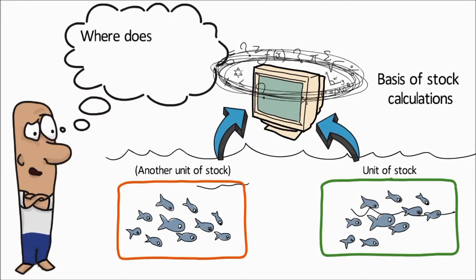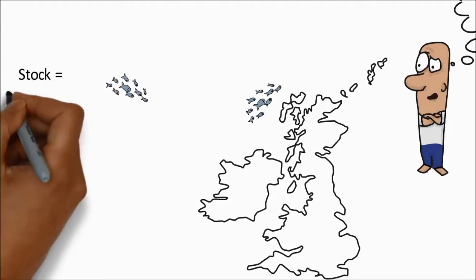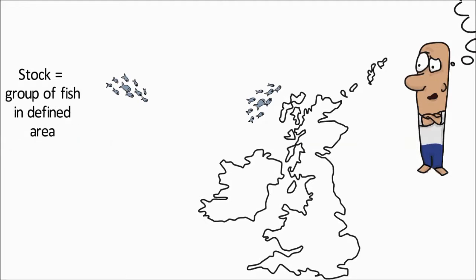So where does one stock stop and another begin? To do a stock assessment, scientists first need to know where the fish live and then a unit of stock is treated as being a geographically discrete group of fish that are found in a defined area.